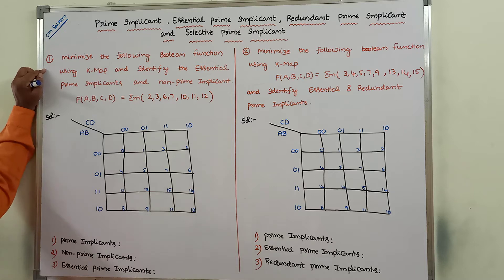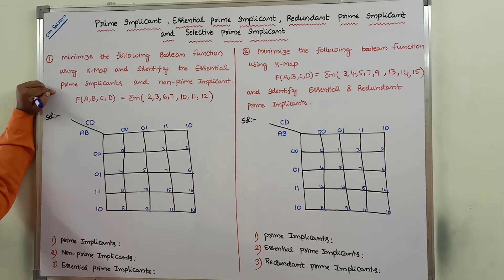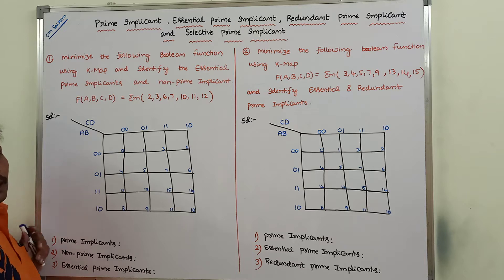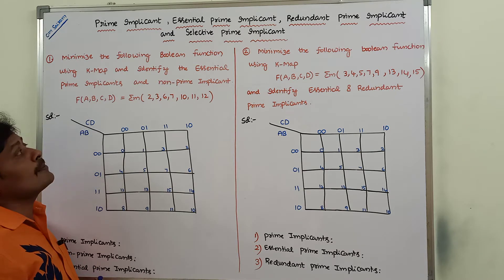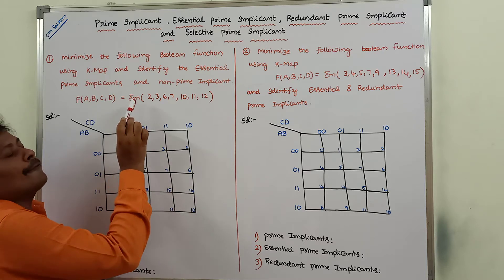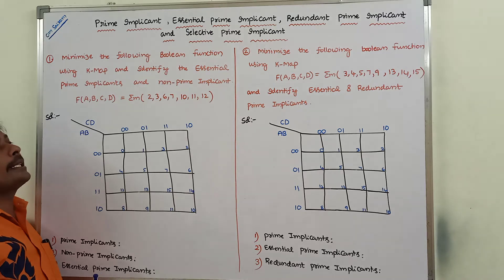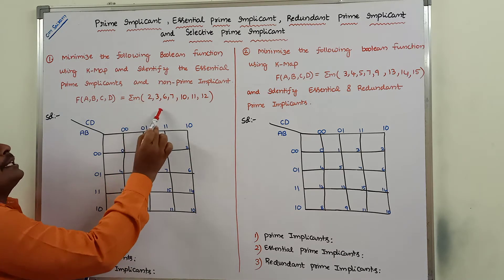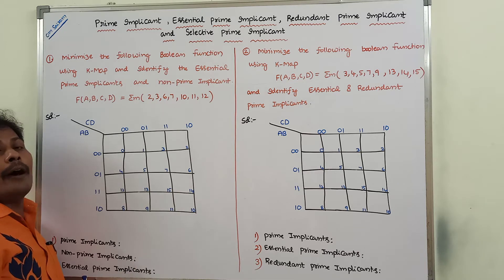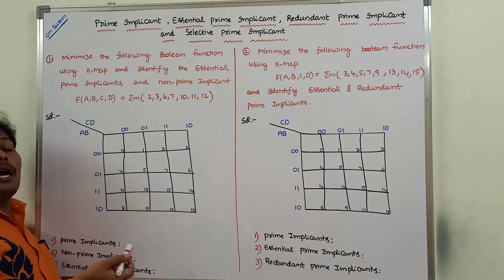In this video, we will discuss the same concept with two different example problems. First one: minimize the following boolean function using Karnaugh map and identify the essential prime implicants and non-prime implicants. The given boolean function f(a, b, c, d) is equal to sigma m of 2, 3, 6, 7, 10, 11, 12. We have to identify the minimal expression, the essential prime implicants, the non-prime implicants, and the prime implicants.